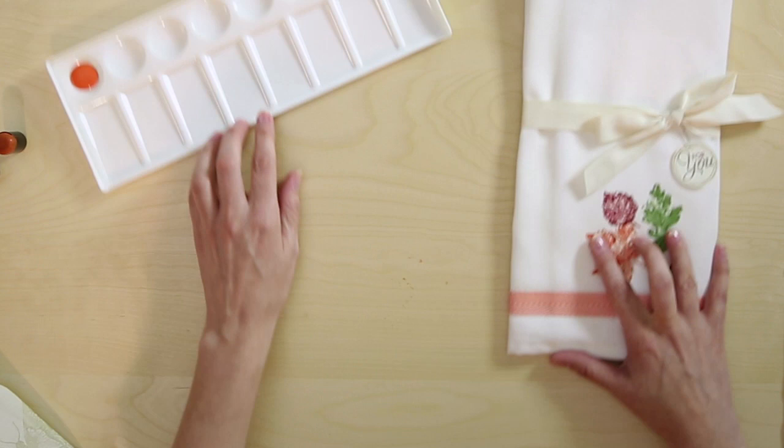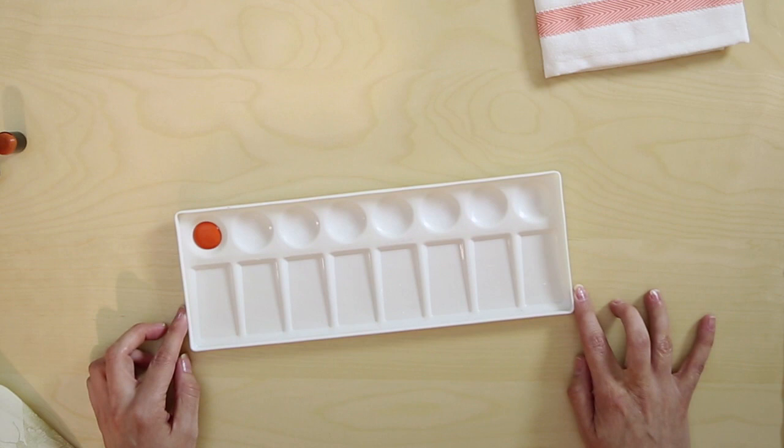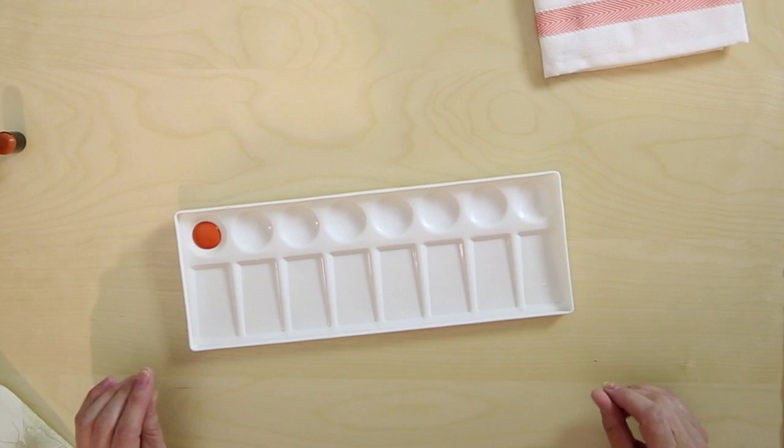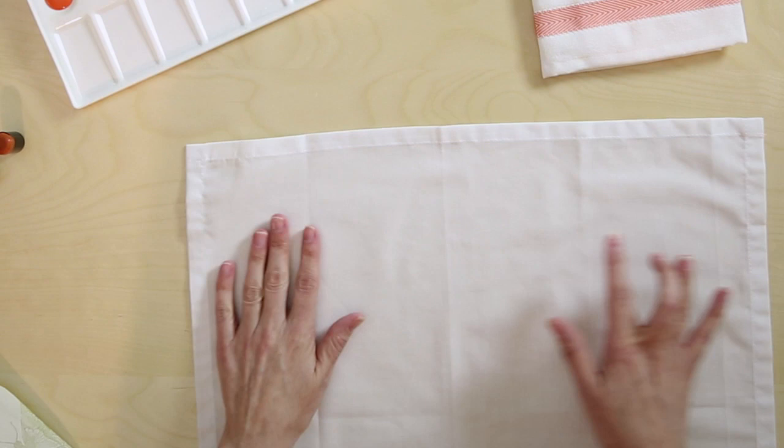Once you have your colors ready to go, you can use a paint tray like I've done here or a PlayCon box to work with your paints. You can stamp on a variety of different fabrics, but you want to make sure that you're using something with a pretty tight fiber like the cotton tea towel I have here or the muslin bag I showed you earlier.